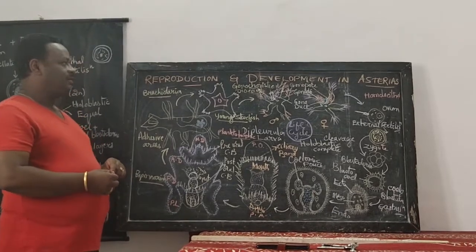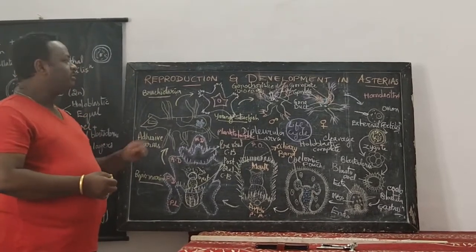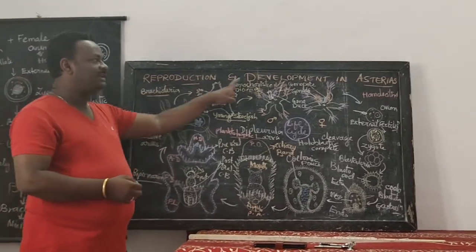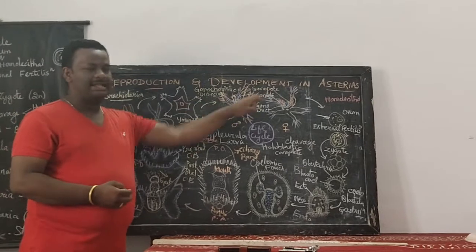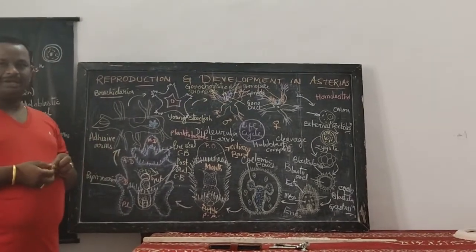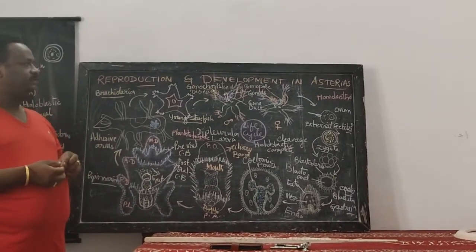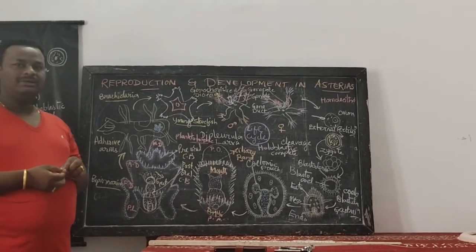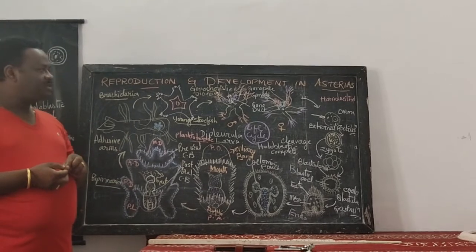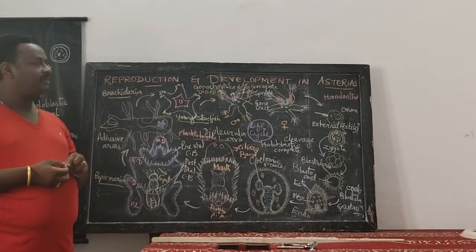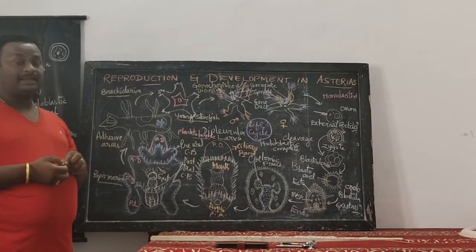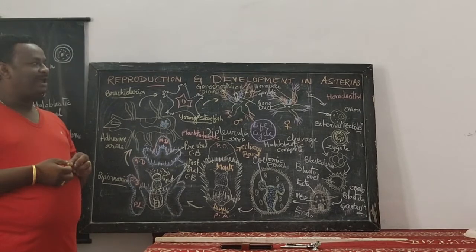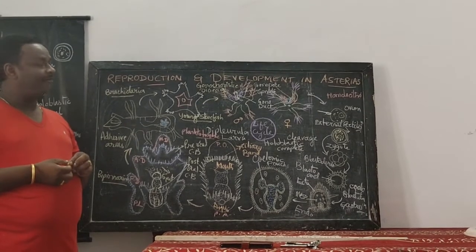Hello students, today we are going to understand reproduction and development in Asterias, commonly called as starfish. As we know, starfish is an echinoderm, which is an exclusively marine form of organism.